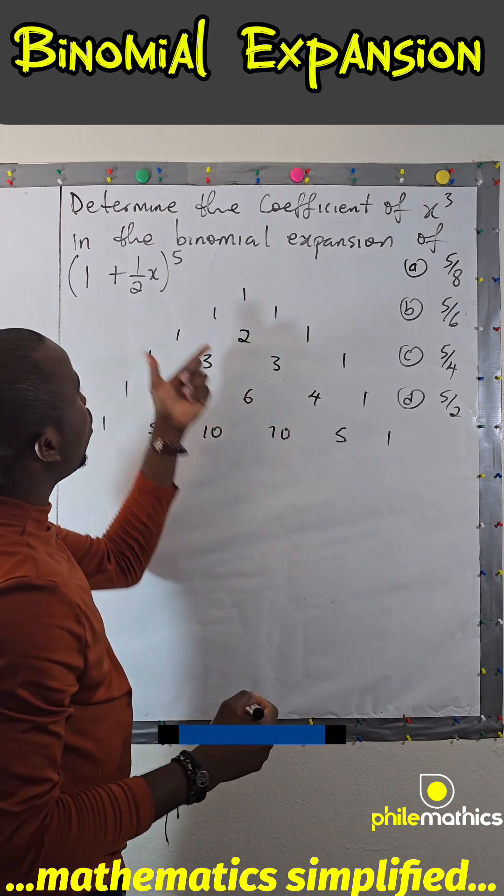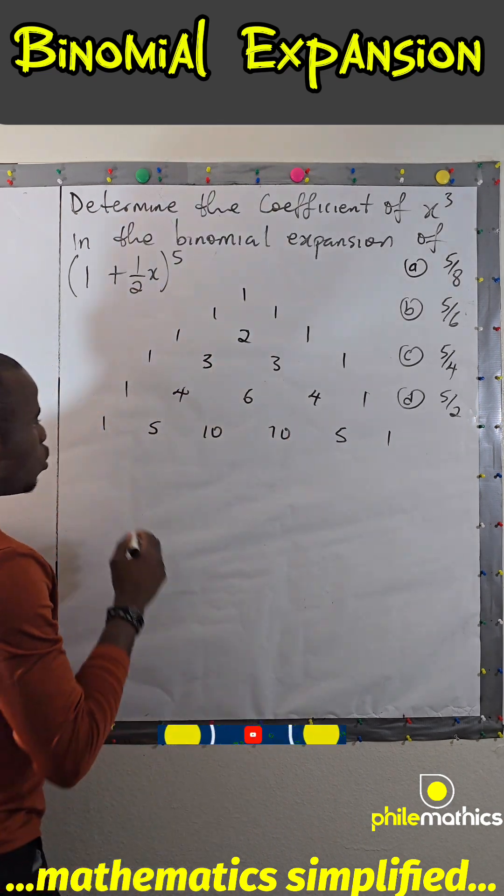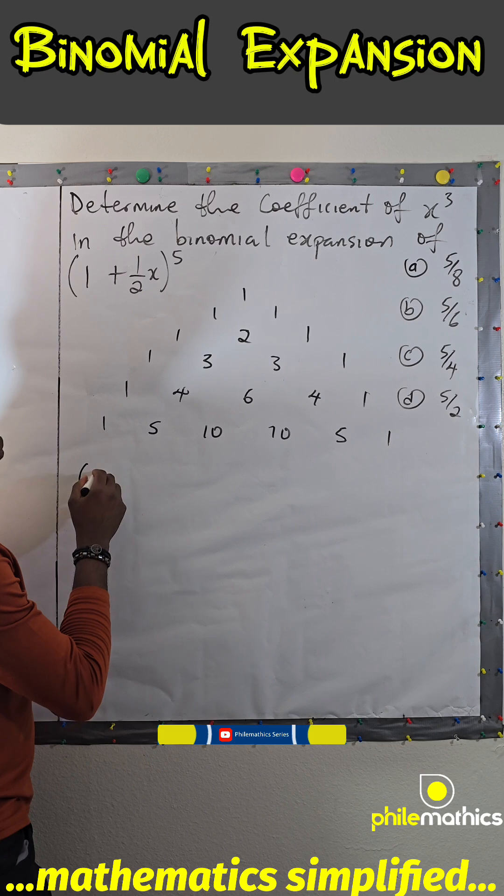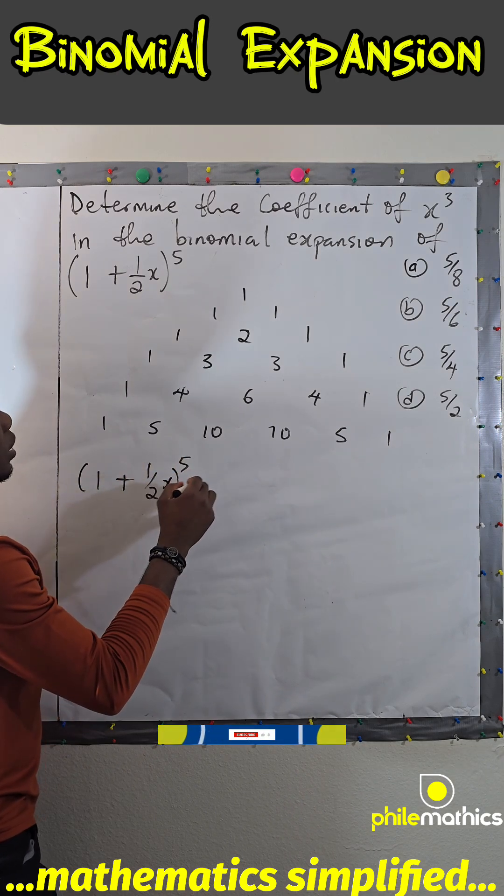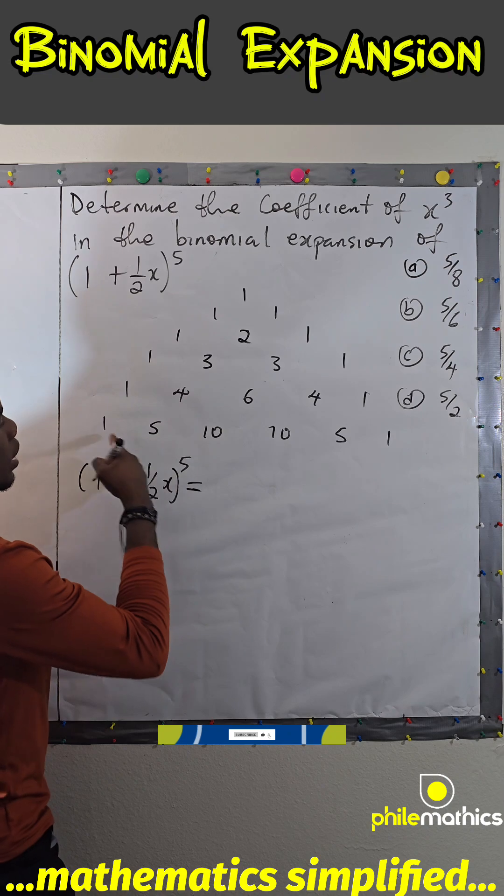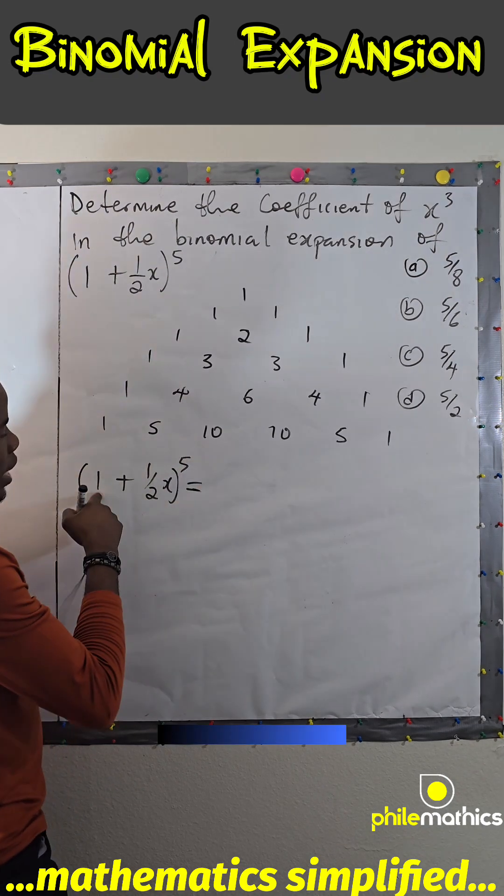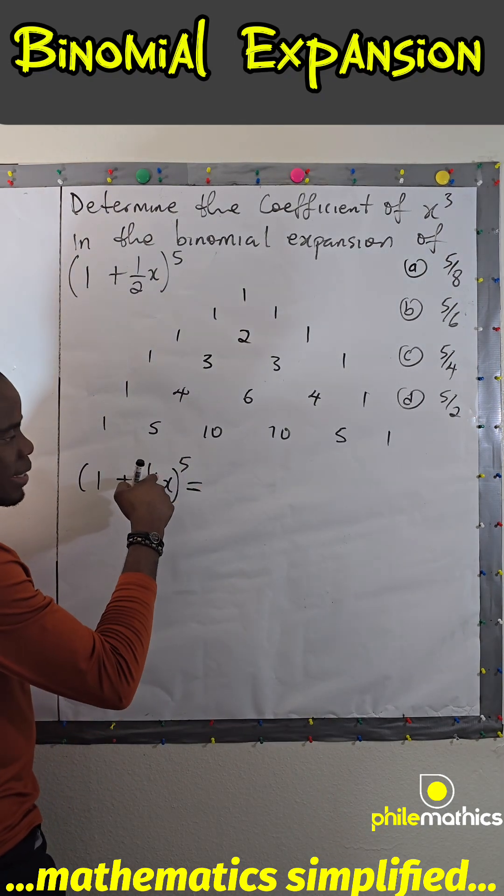Now remember that (1 + 1/(2x))^5 is simply, you write the coefficient first, you write this to the highest power multiplying this such that the sum of the powers have to be 5.